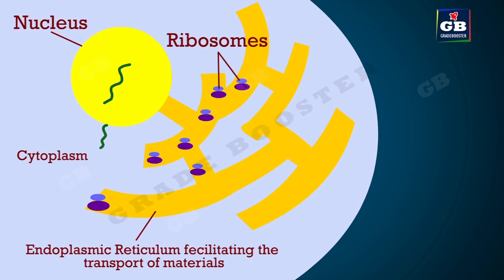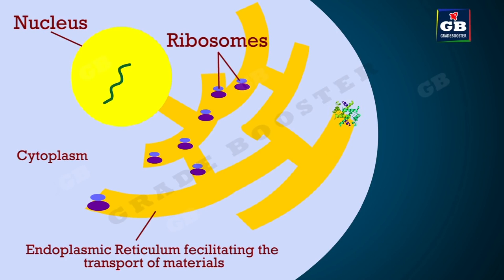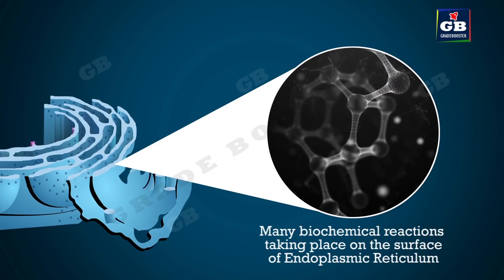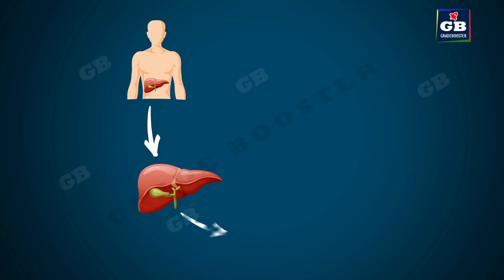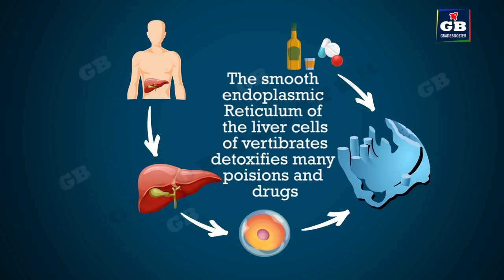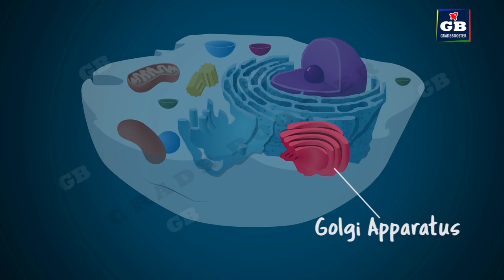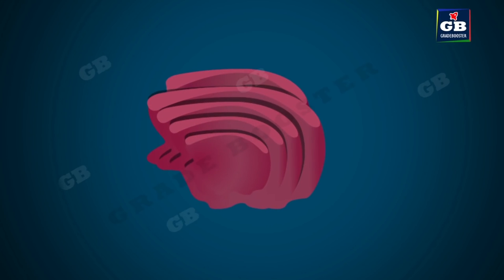Other functions of the endoplasmic reticulum include: facilitating the transport of materials between various regions of the cytoplasm and between the cytoplasm and nucleus; providing a surface for many important biochemical reactions; and, in vertebrates, the smooth endoplasmic reticulum plays an important role in detoxifying toxins and drugs.